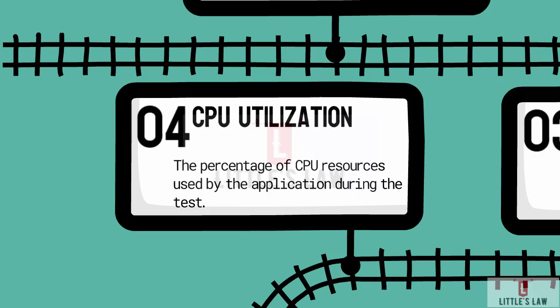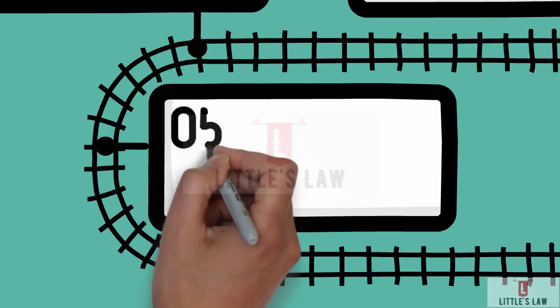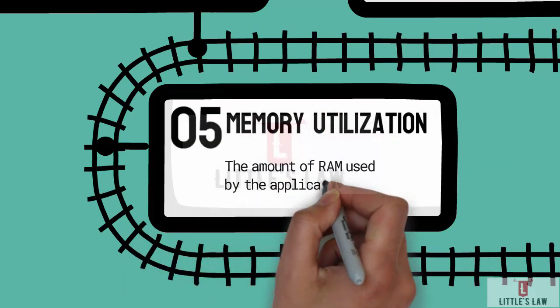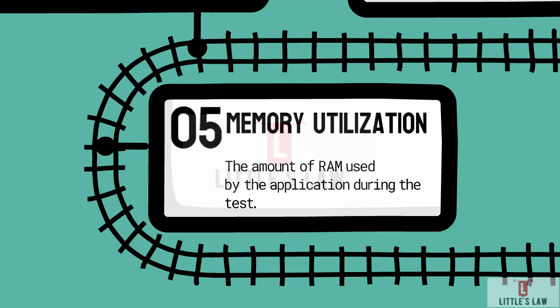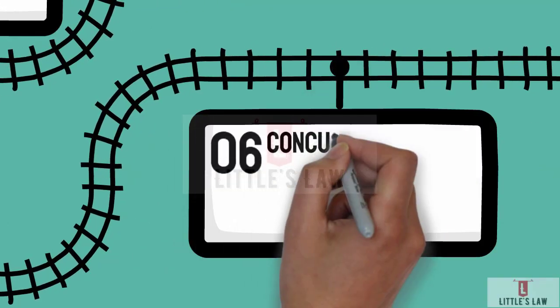The fifth metric is memory utilization. Memory utilization is the amount of RAM or memory used by the application during the test. We need to collect memory utilization to ensure the application uses memory efficiently and does not suffer from memory leaks, which can lead to crashes or degraded performance over time.